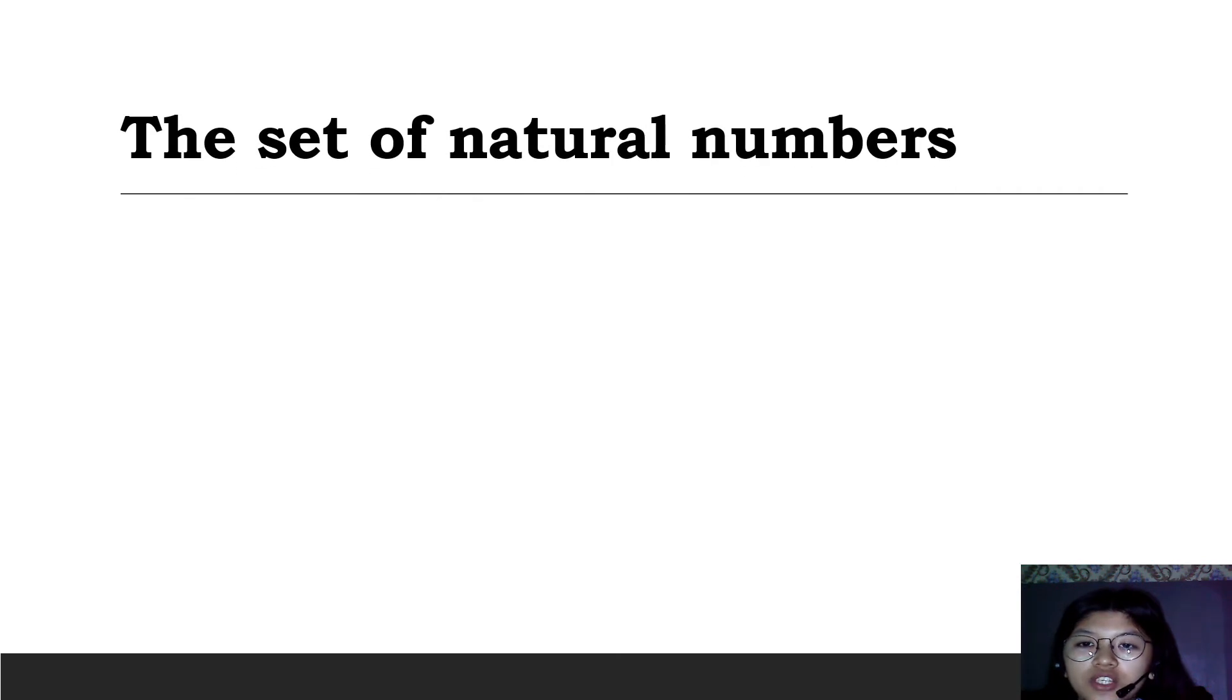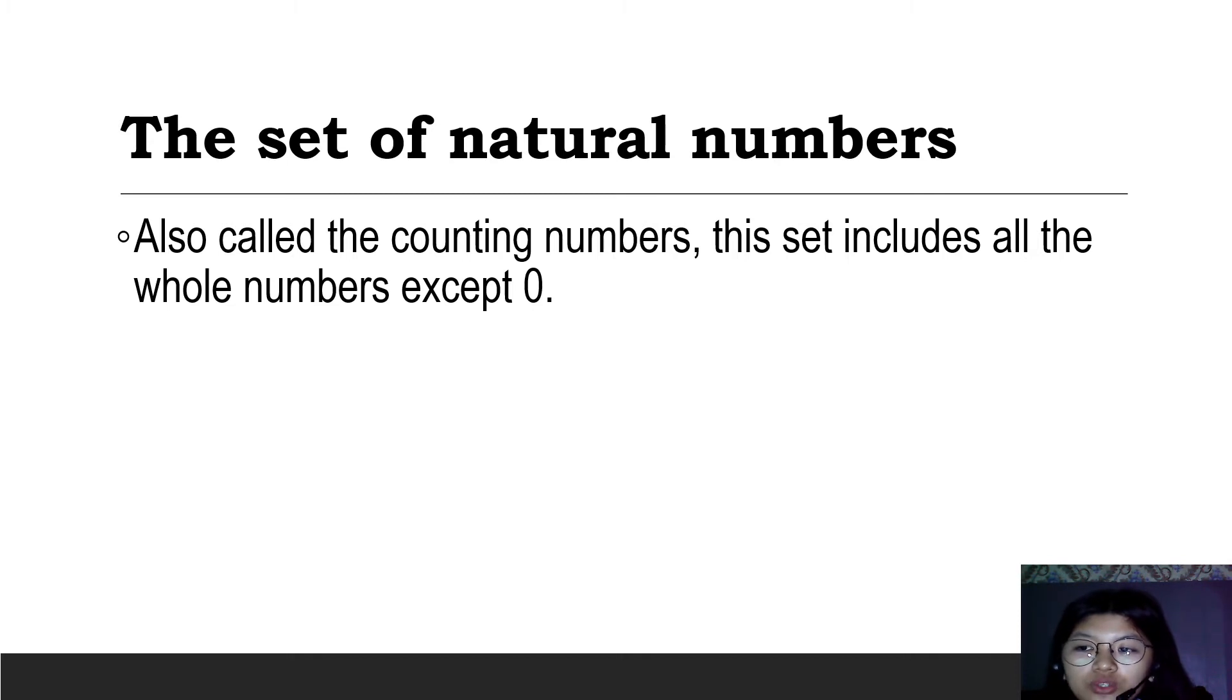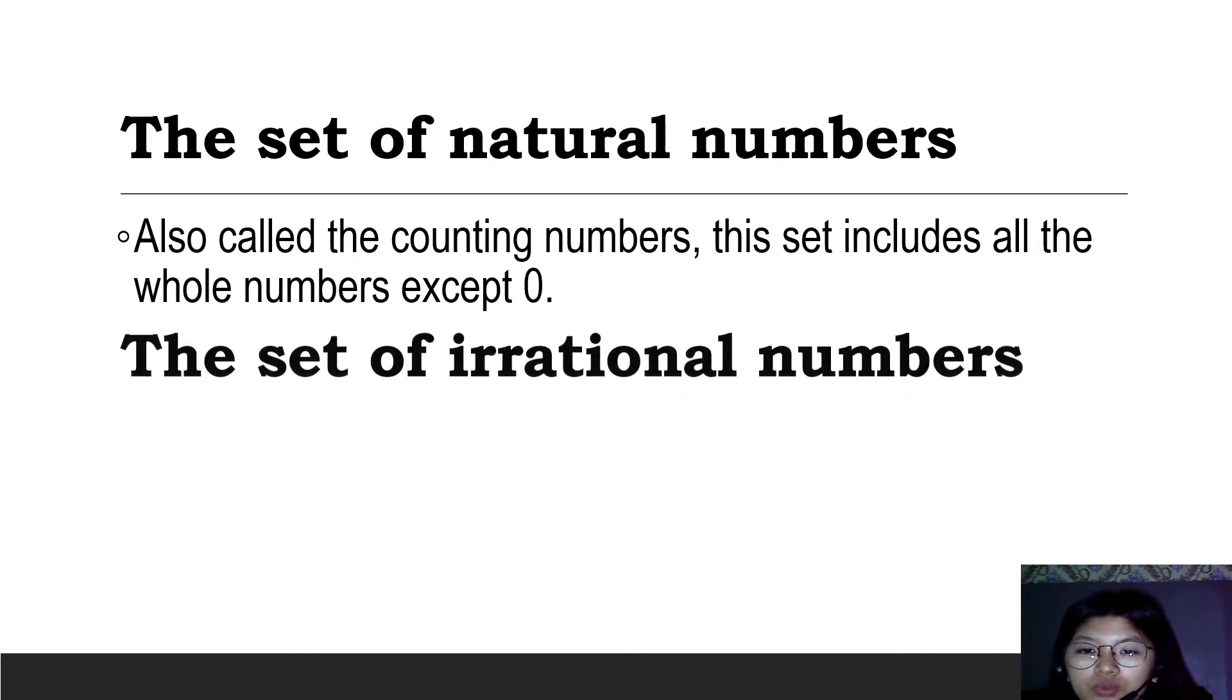The set of natural numbers, also called the counting numbers, includes all the whole numbers except 0. Everything in the whole numbers except 0. We have 1, 2, 3, 4, 5, and so on.